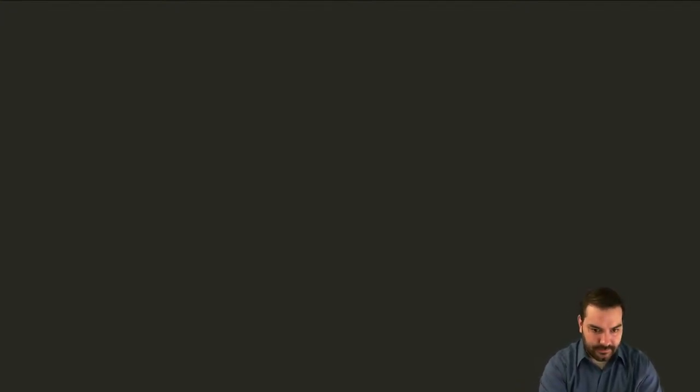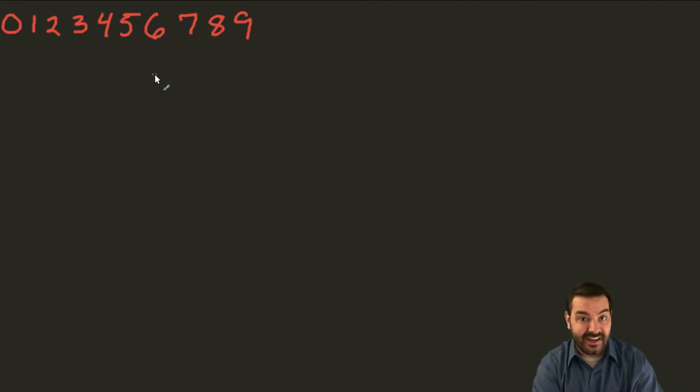So let's think about things from our perspective for a second. We have a number system that has 0, 1, 2, 3, 4, 5, 6, 7, 8, 9. We have these symbols that we can work and count from.